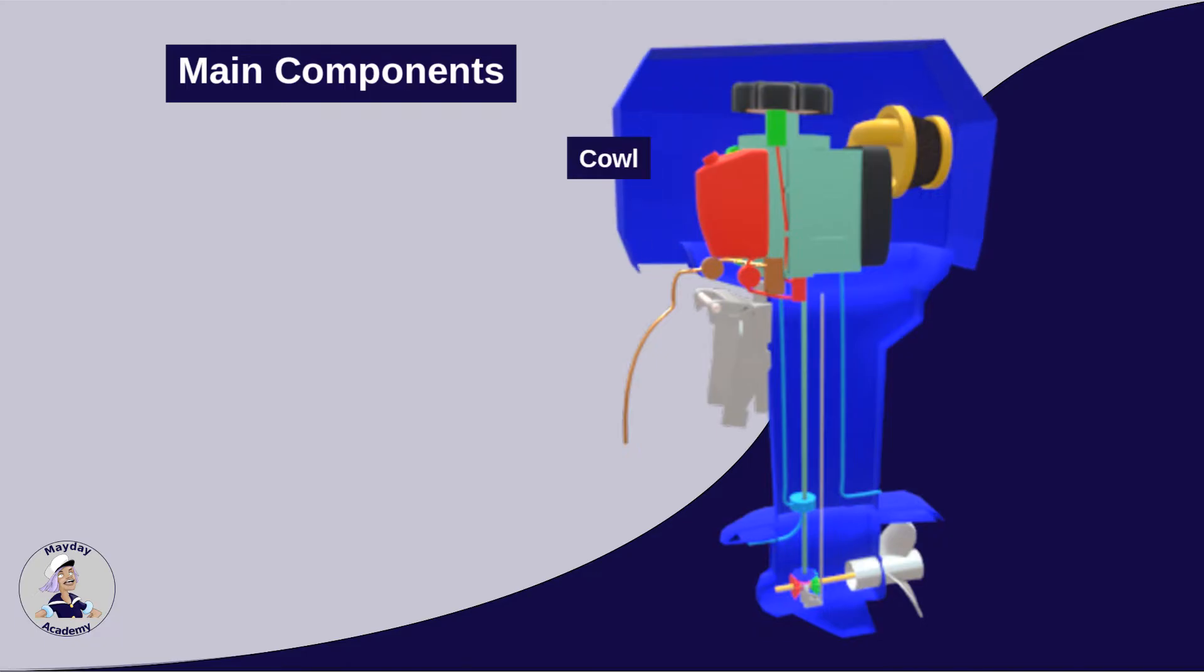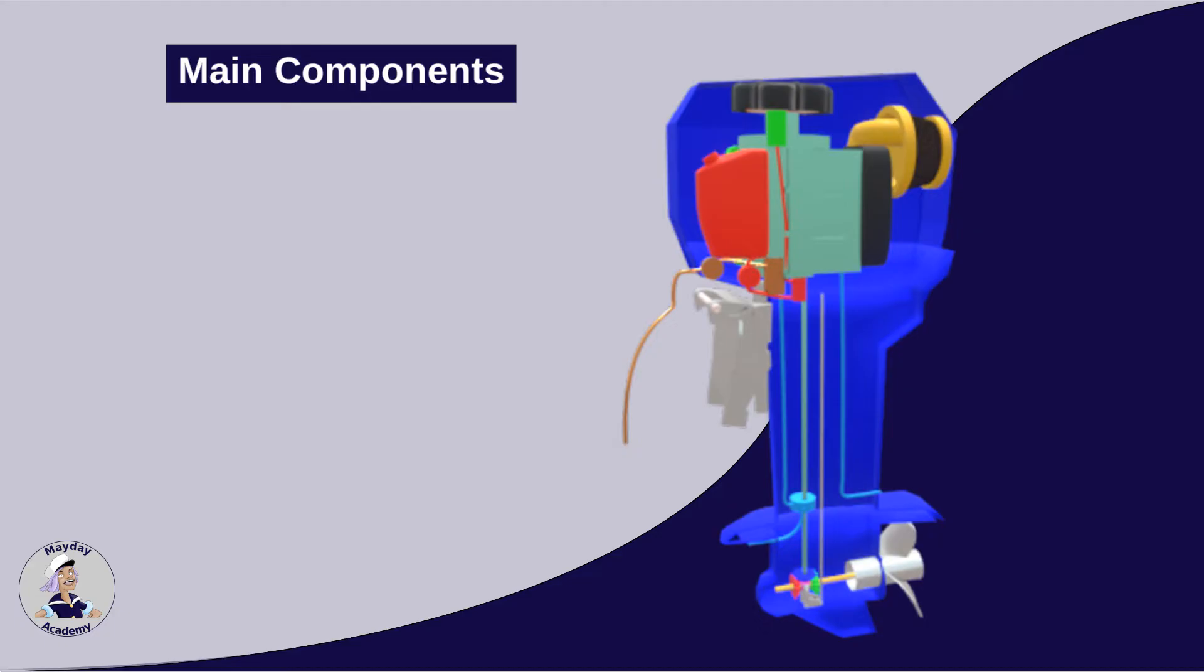The cowl is the outer cover of the engine, designed to protect it from water and debris. It also reduces engine noise and contributes to the engine's overall aesthetic.